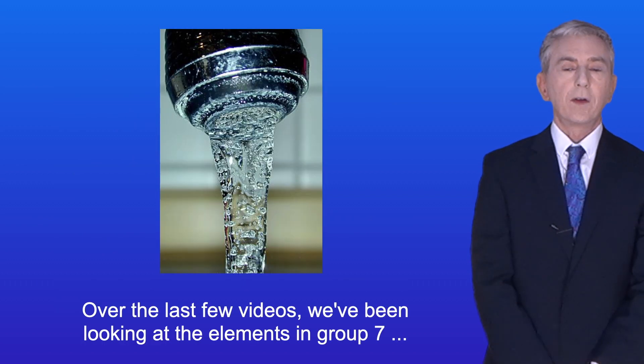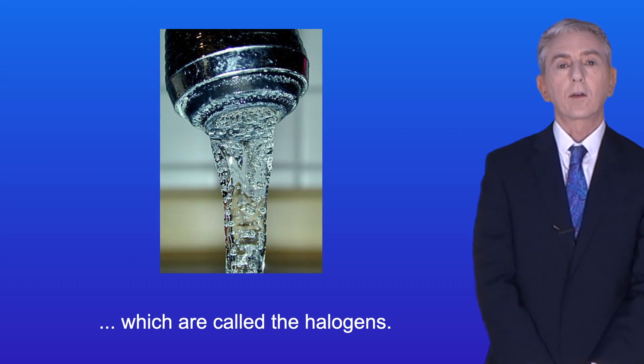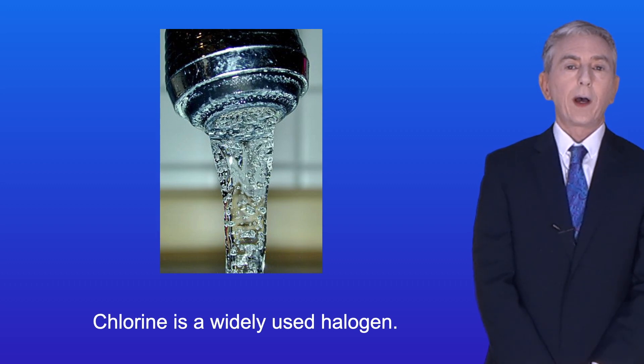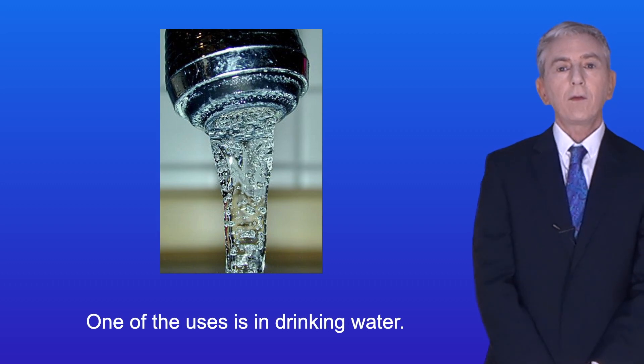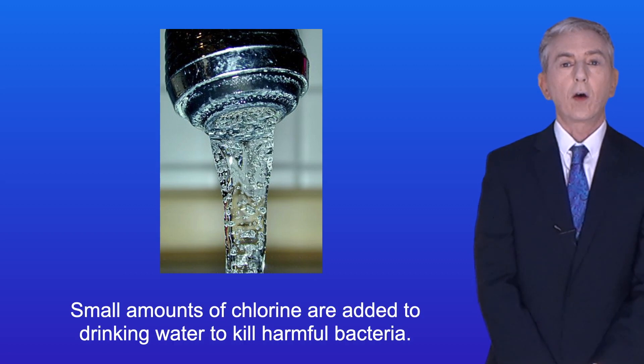Over the last few videos we've been looking at the elements in group 7 which are called the halogens. Chlorine is a widely used halogen and one of the uses is in drinking water. Small amounts of chlorine are added to drinking water to kill harmful bacteria.